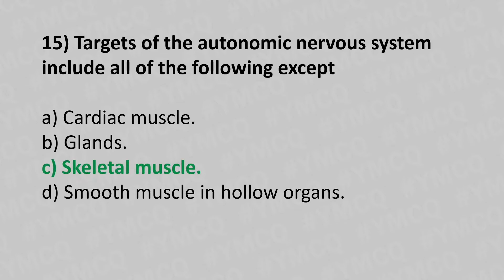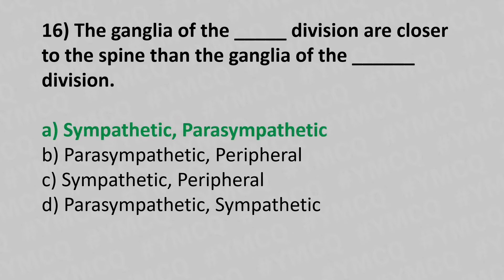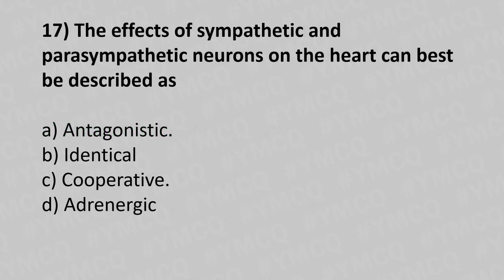Question 16: The ganglia of the ___ division are closer to the spine than the ganglia of the ___ division. Option A: sympathetic and parasympathetic. Option B: parasympathetic and peripheral. Option C: sympathetic and peripheral. Option D: parasympathetic and sympathetic. The answer is Option A — sympathetic and parasympathetic.